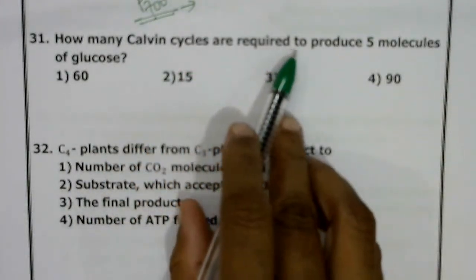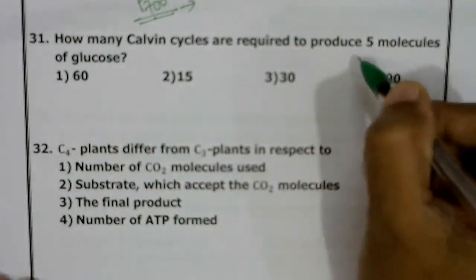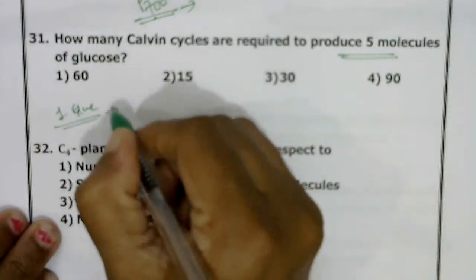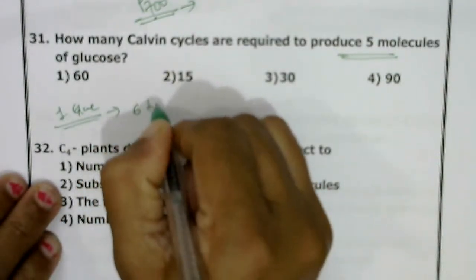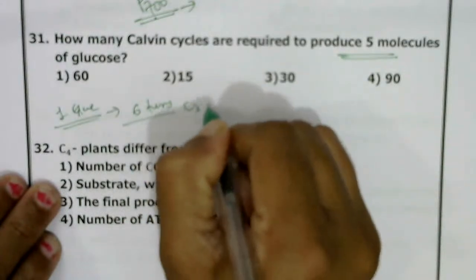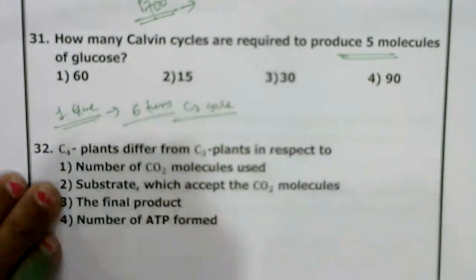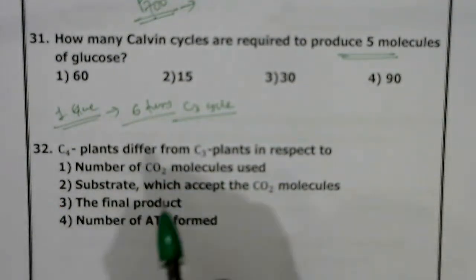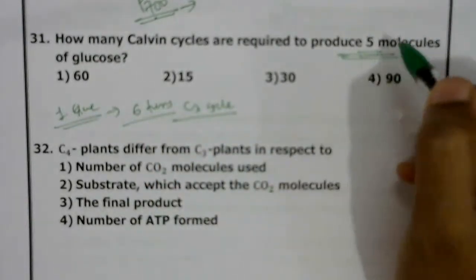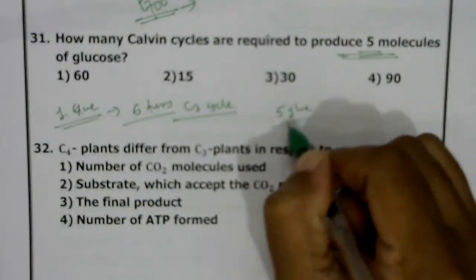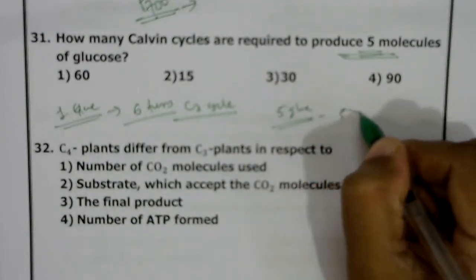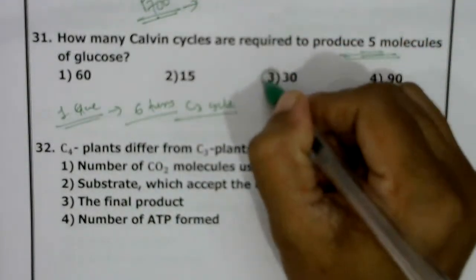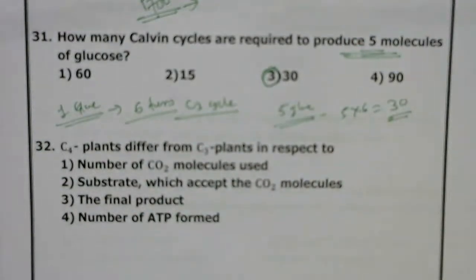How many Calvin cycles are required to produce 5 molecules of glucose? For one glucose molecule, 6 turns of the C3 cycle are required, because during each turn one CO2 is fixed and 6 CO2 are needed per glucose. For 5 glucose molecules: 5 × 6 = 30 turns. Correct answer: 30 turns of the Calvin cycle.